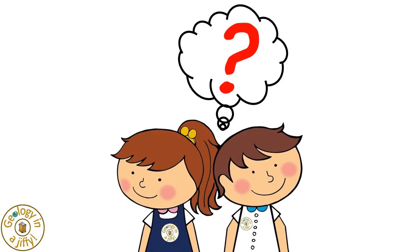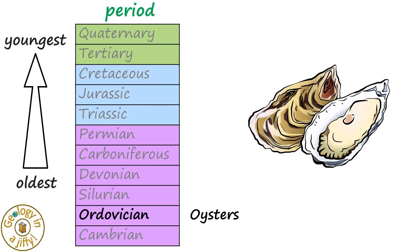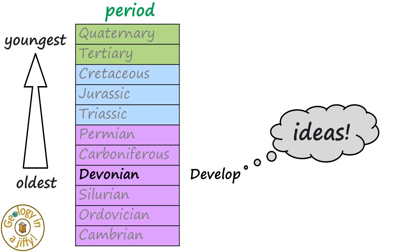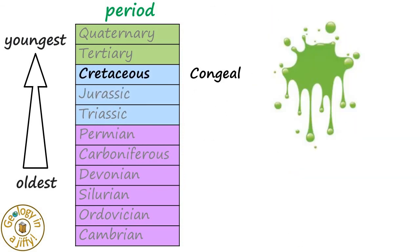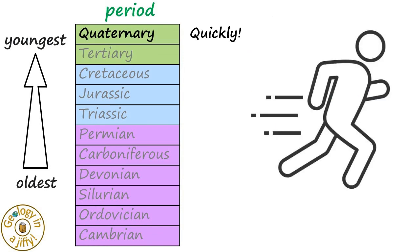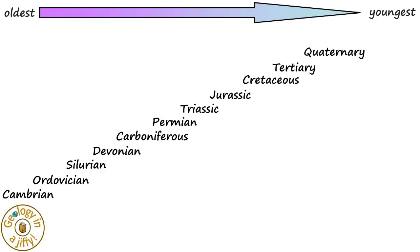Which we can remember by: Cold oysters sometimes develop cute pearls. Their juices congeal too quickly. The eleven periods of the Phanerozoic Aeon.